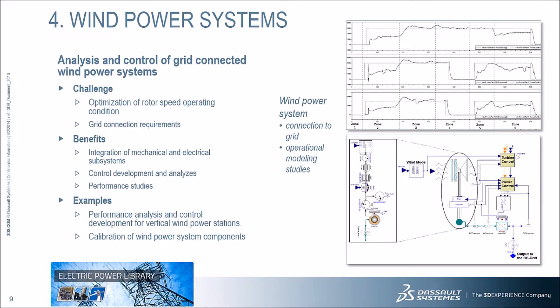Another solution using the electric power library is for grid-connected wind power systems, ranging from capturing energy from wind by the rotor all the way to grid-connected electric AC power. The electrical components — such as generator, converters, DC link, and transformer — are all based on the Modelica electric power library. A major benefit lies in the systemic integration of different domains, here integrating mechanical and electrical systems.